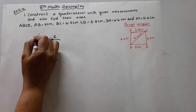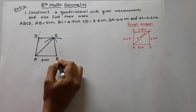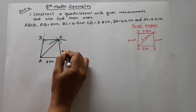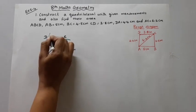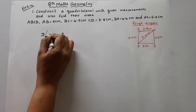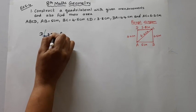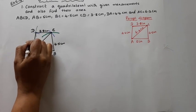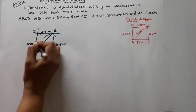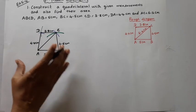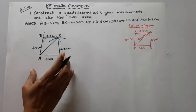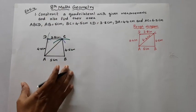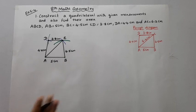This is point D. AB = 5 cm, BC = 4.5 cm, CD = 3.8 cm, DA = 4.4 cm. The quadrilateral is now constructed. Next, find the area.